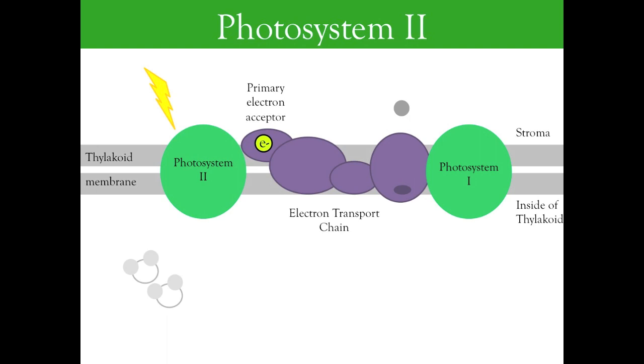As the electron moves down the electron transport chain, it loses energy. This release of energy is used to pump a hydrogen ion from the stroma across the thylakoid membrane. The electron lost from photosystem 2 must now be replaced.